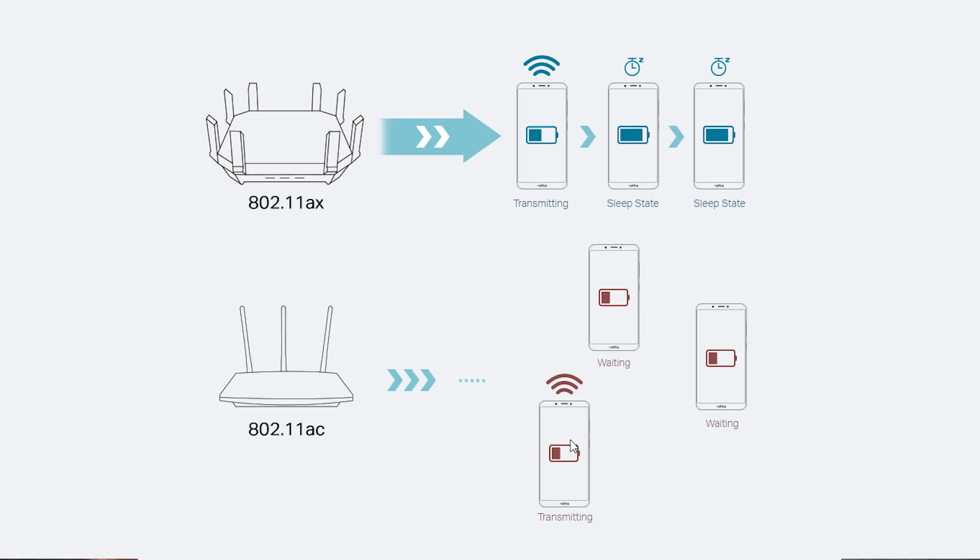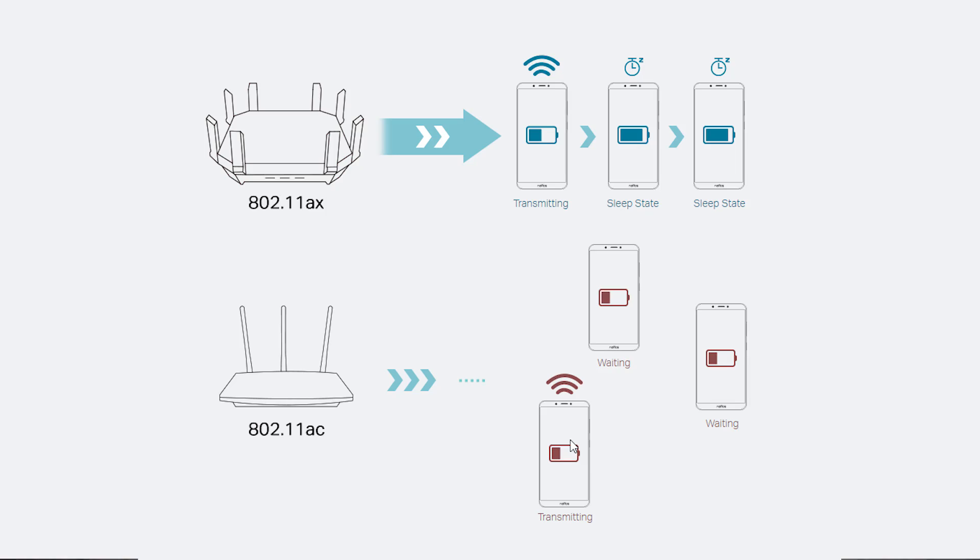Another Wi-Fi 6 feature is Target Wake-Up Time, or TWT. The main application is Smart Homes. If you have a smartphone, smart light, smart switch, or smart regulator, these are all smart devices. Each smart device communicates with the router on a schedule. With TWT, a smart device that is compatible with Wi-Fi 6 will wake up only at its scheduled time to transfer data to the router, then go back to sleep. This is the Target Wake-Up Time.